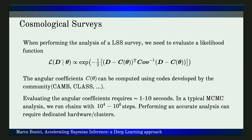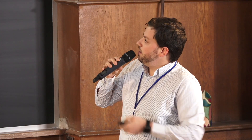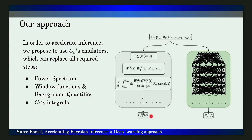In a typical MCMC analysis we require from 10^4 to 10^6 or even more steps, so to perform a complete analysis we require a long time or dedicated hardware. In our approach, which is similar but a bit different from the one presented by Alessio, we aim to replace all the steps required to compute the C_ℓs with a neural network emulator — not only the power spectrum, but also the window function, background quantities evaluation, and the C_ℓs numerical integral evaluation.